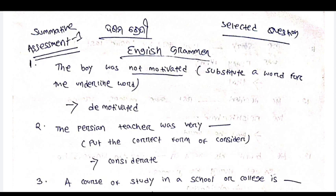The boy was not motivated. You can substitute a word for the underlined word 'not motivated.' You can write 'demotivated.' This is the question. He gives you a question. Practice — you have to do this question.